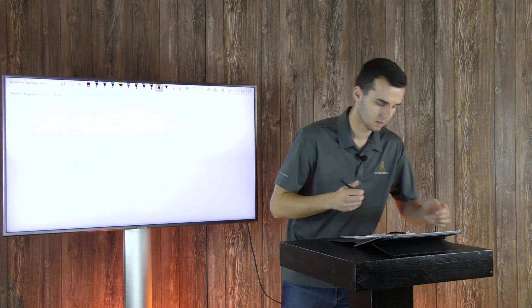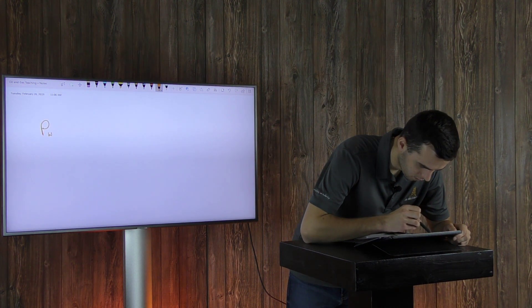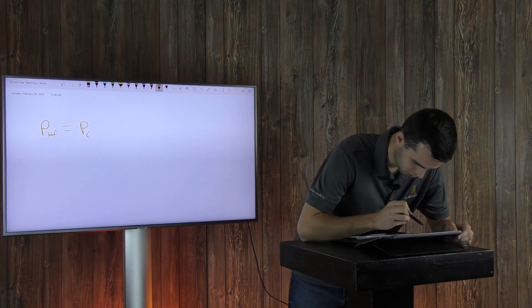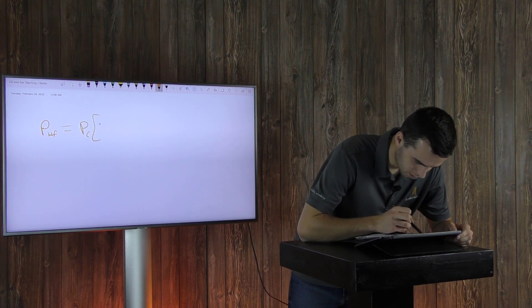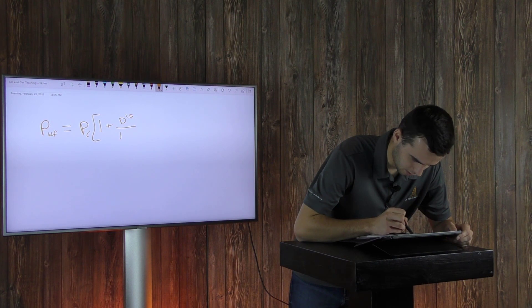So let's go through the equation. Your wellbore flowing pressure, PWF let's call it, will equal your casing pressure times 1 plus depth raised to the 1.5 power divided by 100.